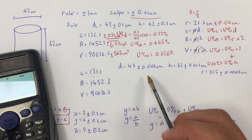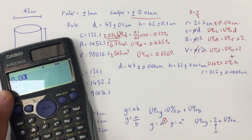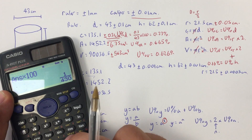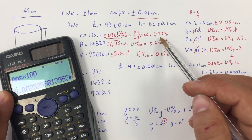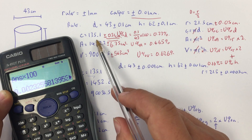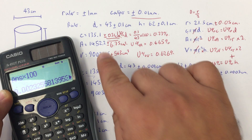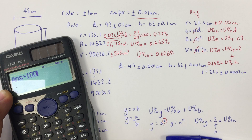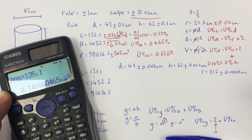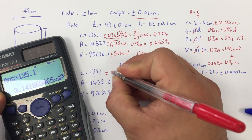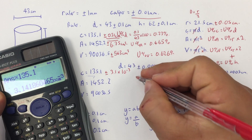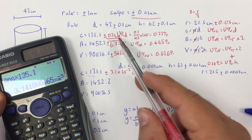For the circumference with the caliper, the percentage uncertainty in D is 0.01 divided by 43 times 100. As you'd expect, this is just 100 times smaller than before. That's also the percentage uncertainty in C. Dividing by 100 and multiplying by 135.1 gives an absolute uncertainty of plus or minus 3.1 times 10 to the minus 3 centimetres — 100 times smaller.